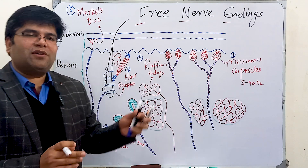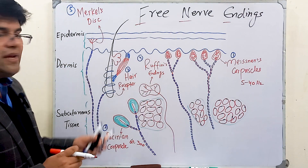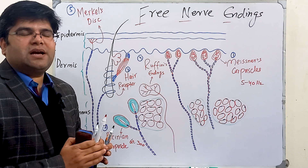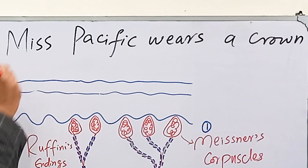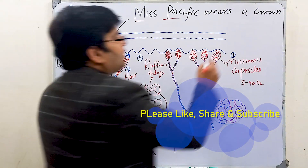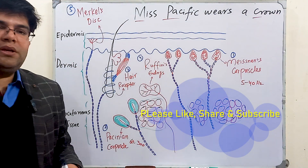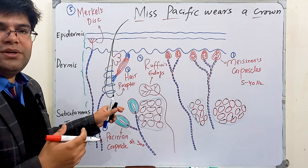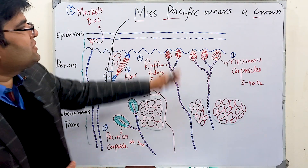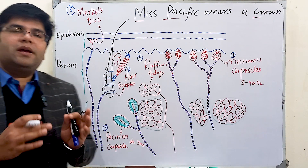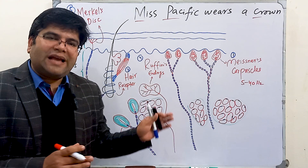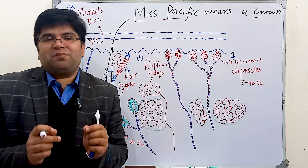The last mnemonic is for the rapidly adapting receptors. The mnemonic to memorize their names is: 'MisPacific wears a crown' — 'Mis' is for Meissner's corpuscles, 'Pacific' is for Pacinian corpuscles, and hair follicle receptors are also rapidly adapting receptors. I hope you enjoyed learning the features of these mechanoreceptors and most importantly the mnemonics to remember their features. Thank you so much for watching this video; see you next time.